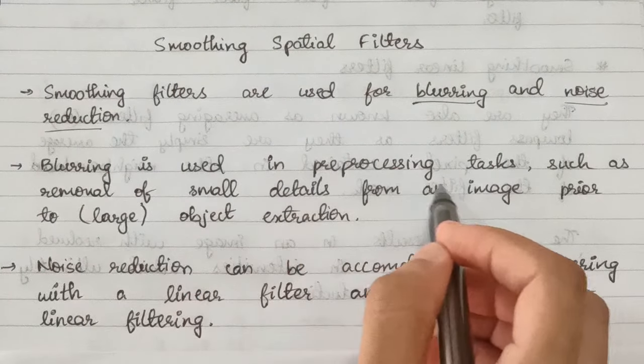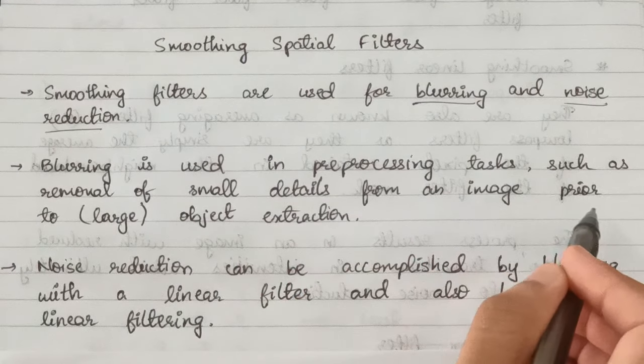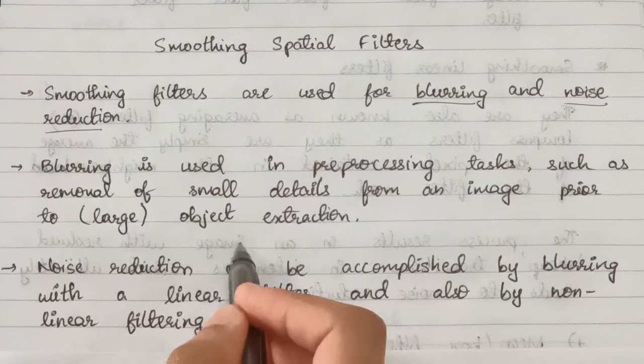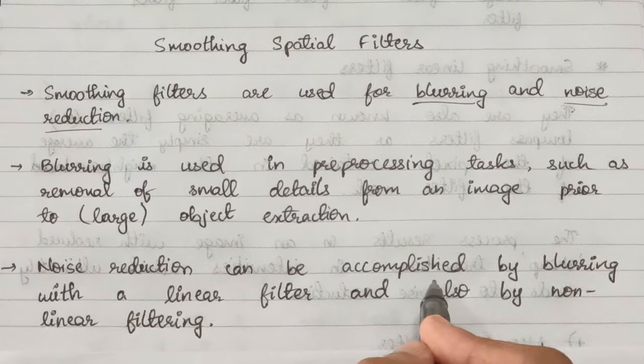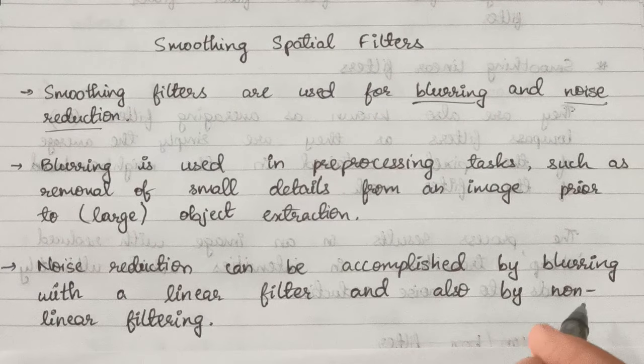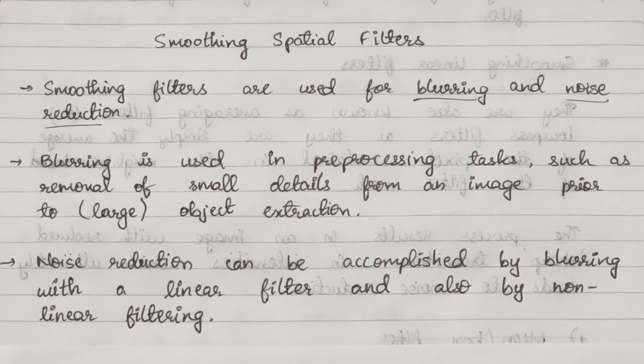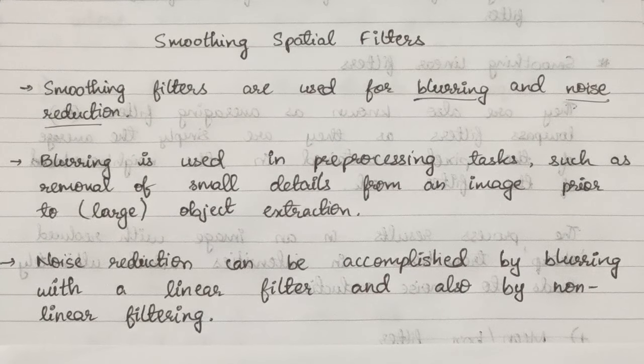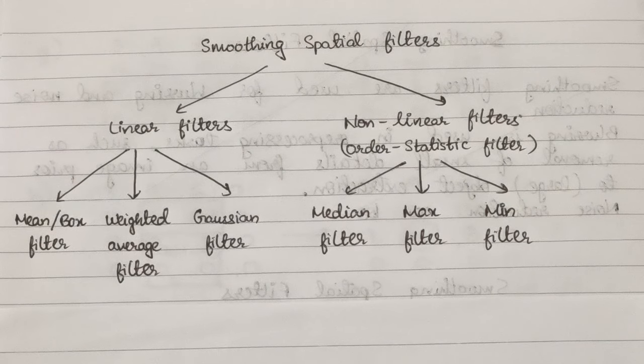Blurring is used in preprocessing tasks such as removal of small details from an image prior to large object extraction, whereas noise reduction can be accomplished by blurring with a linear filter and also by nonlinear filtering.